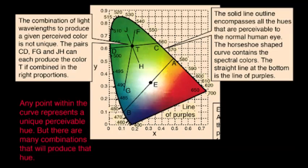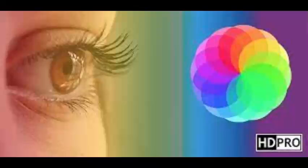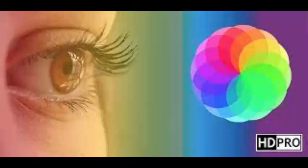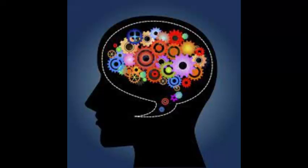An understanding of color involves physics, physiology, and psychology. An object appears colored because of the way it interacts with light. The analysis of this interaction and the factors that determine it are the concerns of the physics of color. The physiology of color involves the eyes and the brain's responses to light and the sensory data they produce. The psychology of color is invoked when the mind processes visual data, compares it with information stored in memory, and interprets it as color.